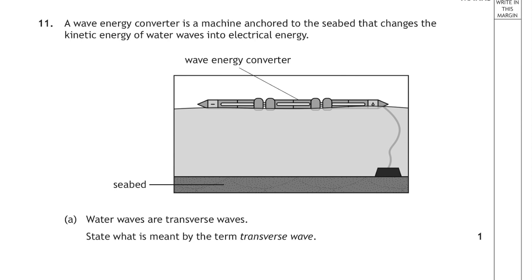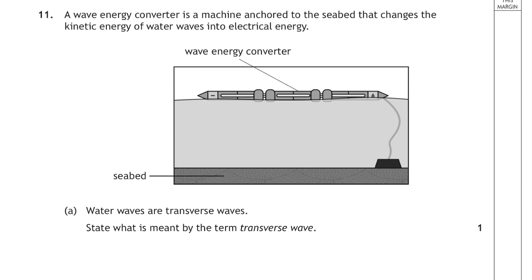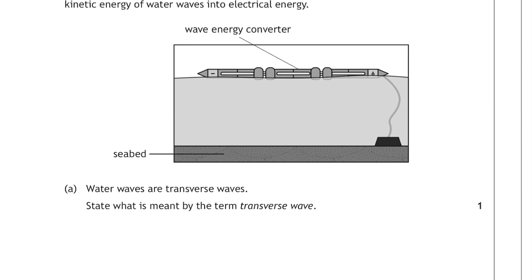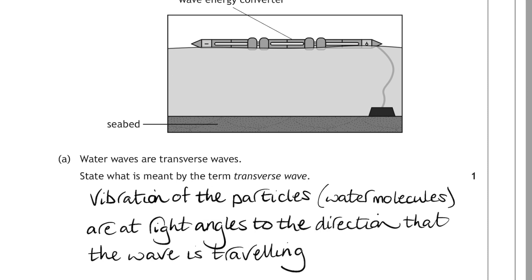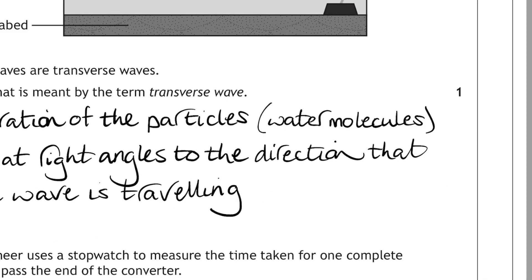Question 11: A wave energy converter is a machine anchored to the seabed that changes the kinetic energy of water into electrical energy. Part A says water waves are transverse waves. State what is meant by the term transverse wave. Your answer has to talk about the oscillations, or the vibration of the particles, or in this case that's the water molecules, and those vibrations are at right angles to the direction that the wave is travelling. A little diagram here might help us as well, so I can sketch a little transverse wave, there's the particles oscillating vertically, and the wave travelling at right angles to that.